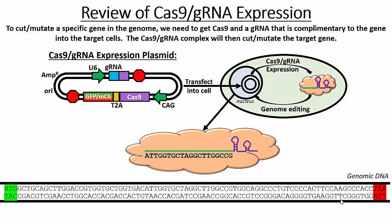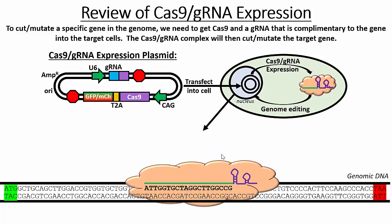Before we get started, let's review how Cas9 works. In our specific approach, we're going to design a Cas9 gRNA expression plasmid shown here in the top left. After it's transfected into the cell, it's going to express the Cas9 protein along with a fluorescent marker protein. We also get expression of a gRNA with its scaffold. The gRNA binds to the Cas9, and then the Cas9 has a nuclear localization signal that allows it to be imported back into the nucleus. It's going to seek out any target sequences that match the gRNA sequence, and when it finds that, it binds and cuts it.